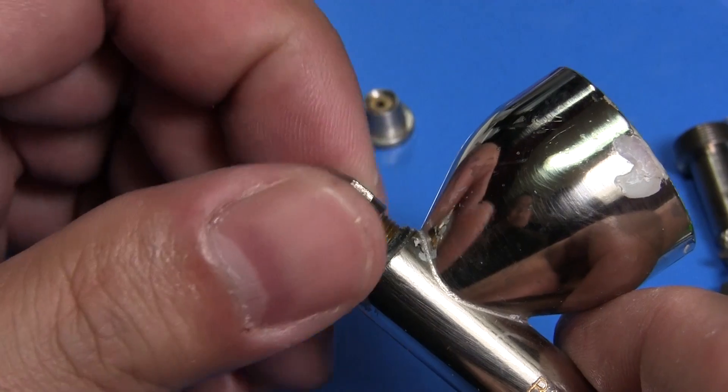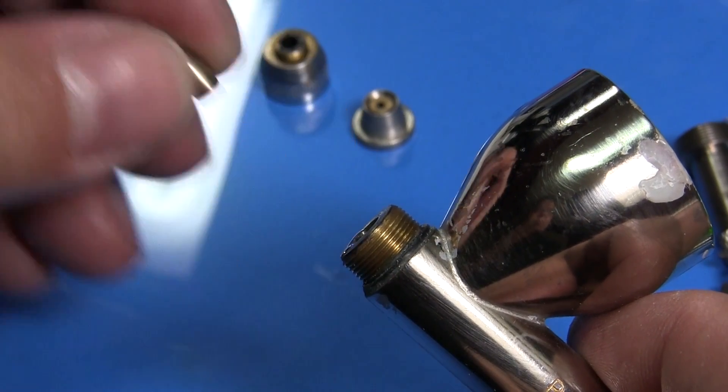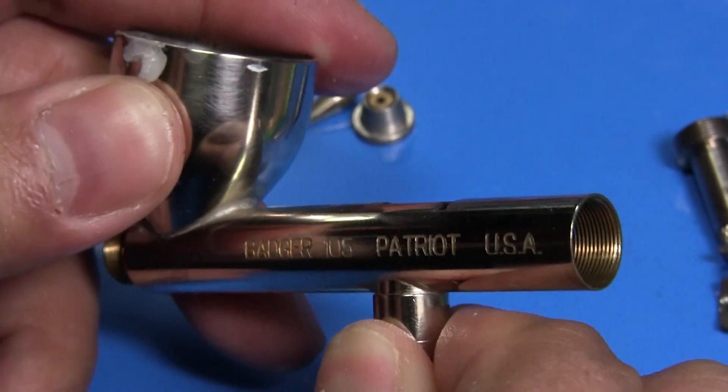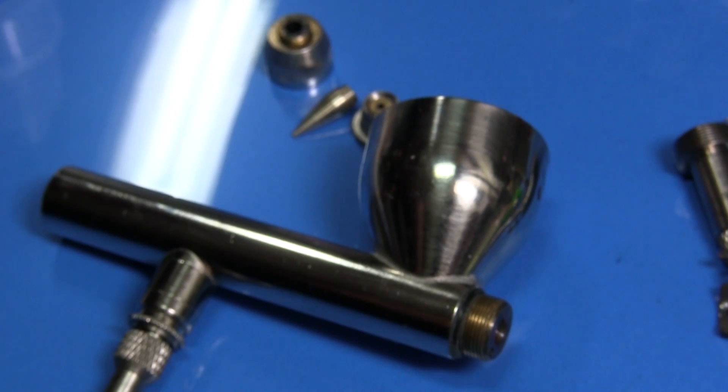Remove the spray regulator, the head, then the tip. And that's it. You don't need to take the valve casing off so we won't cover it here. Now let's put it back together.